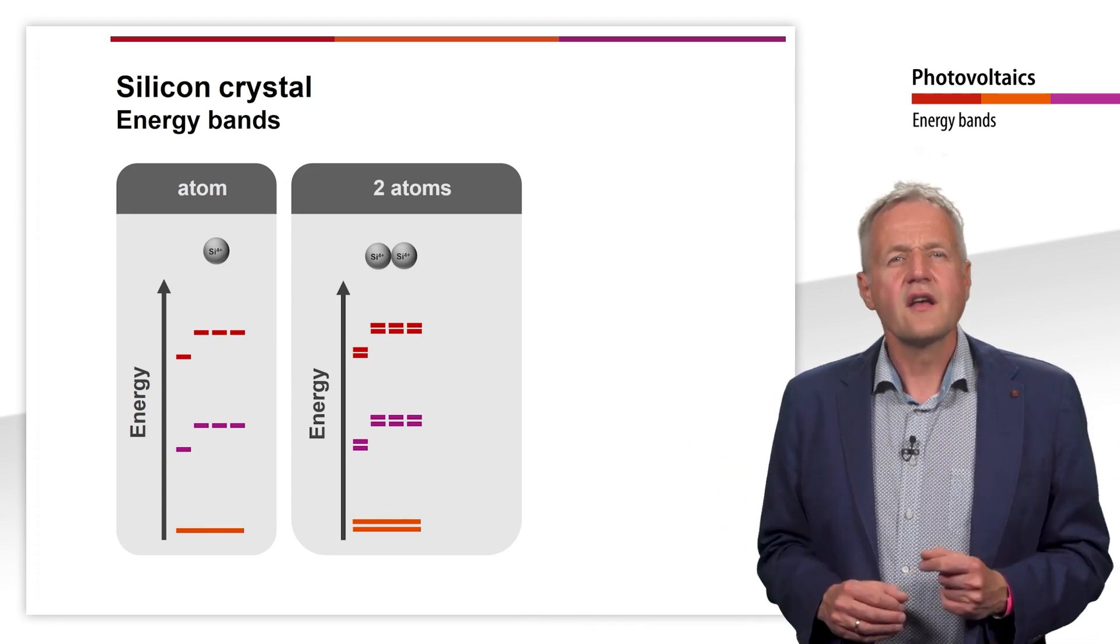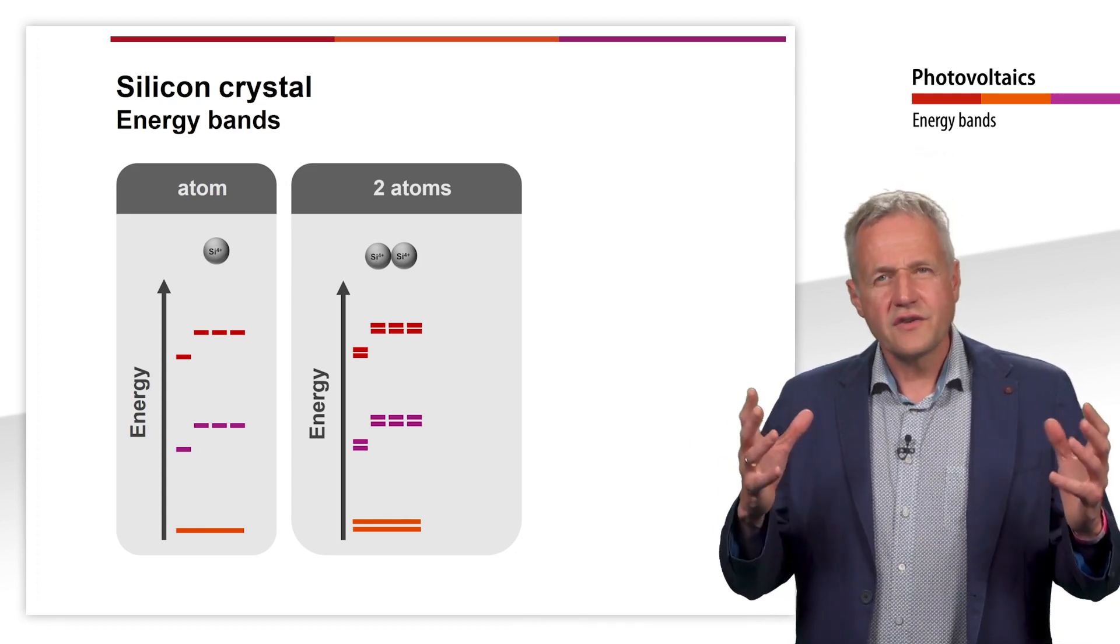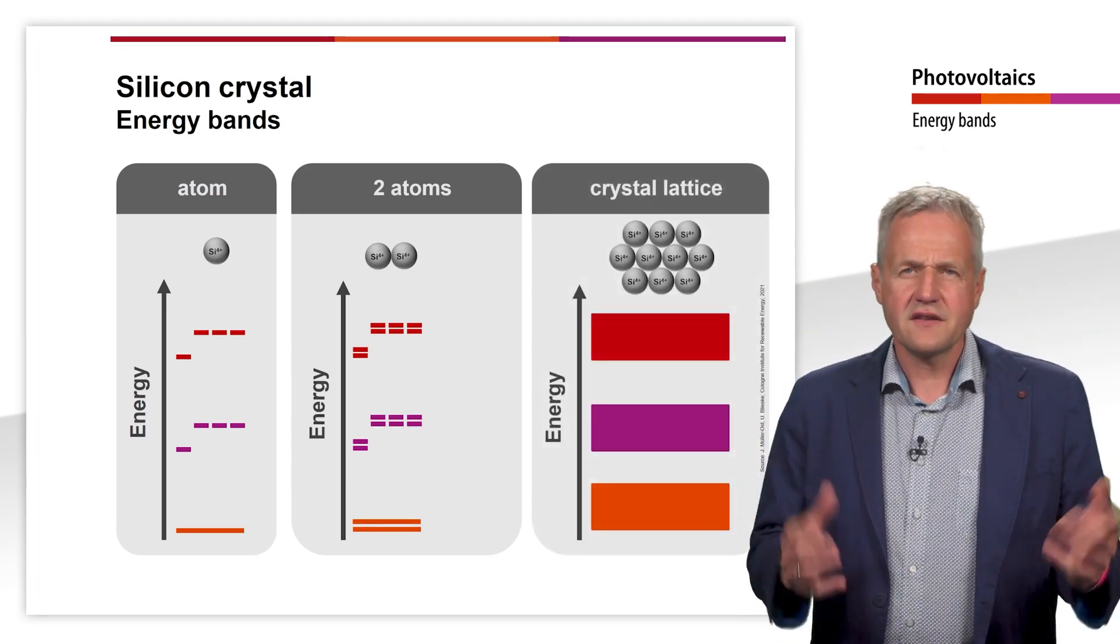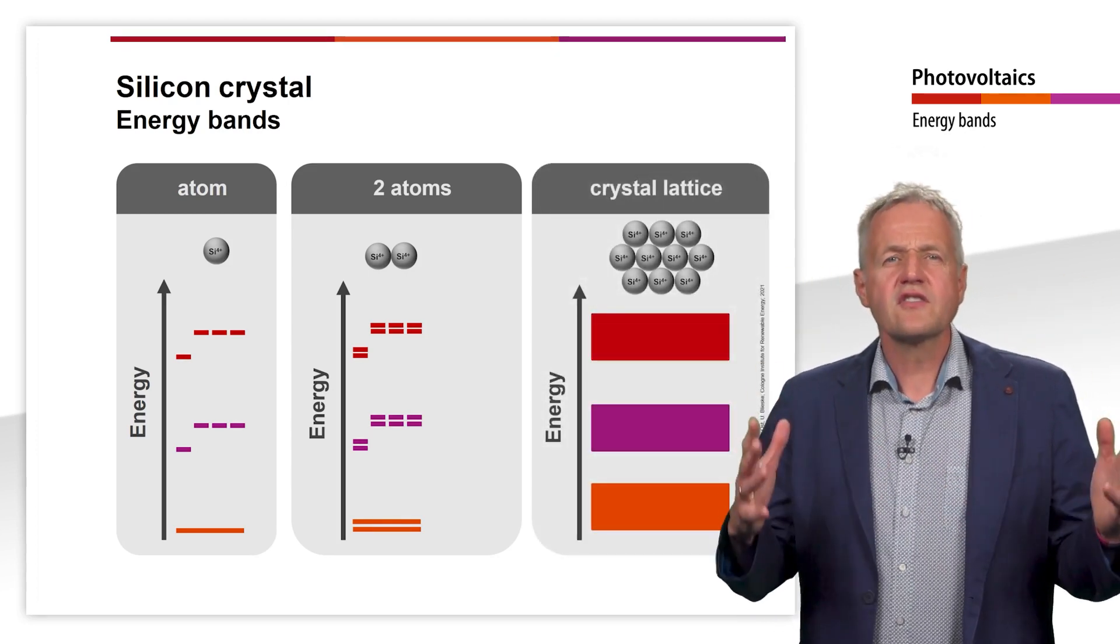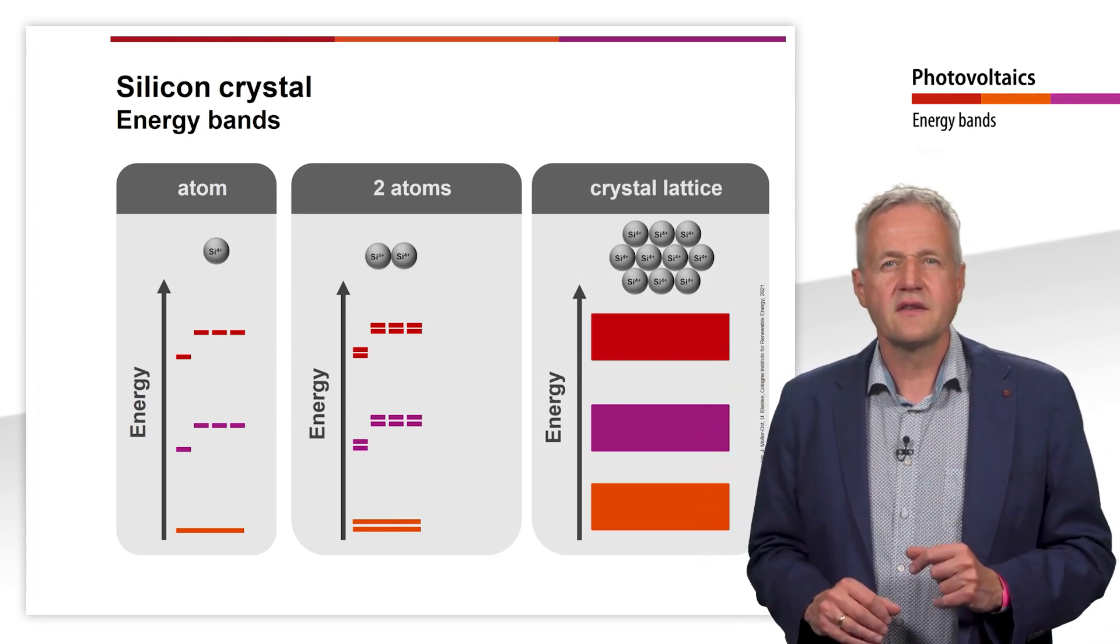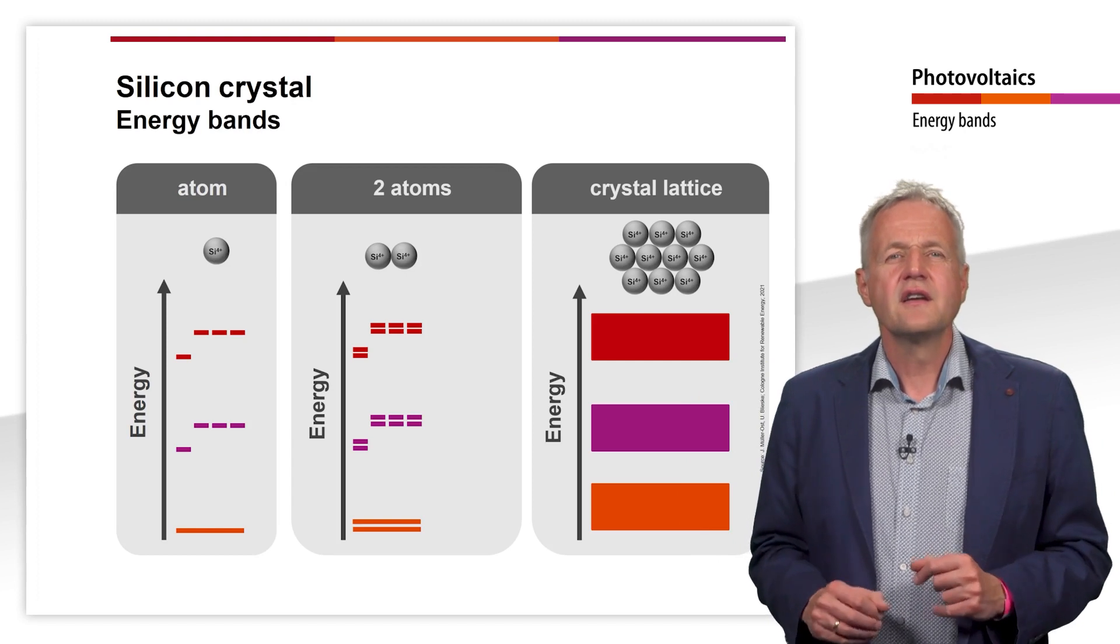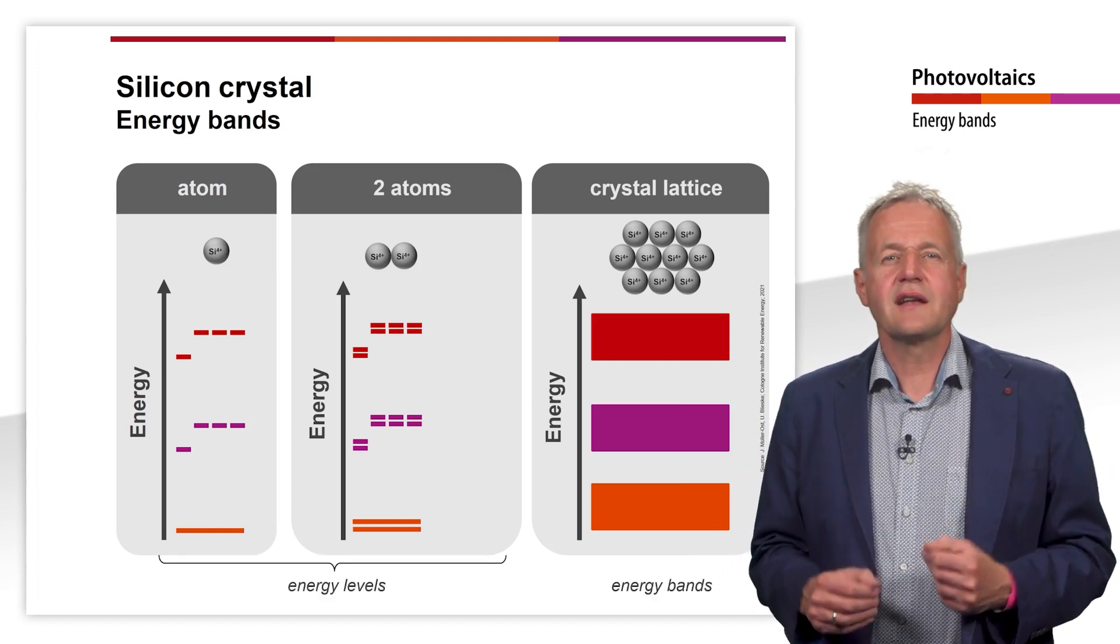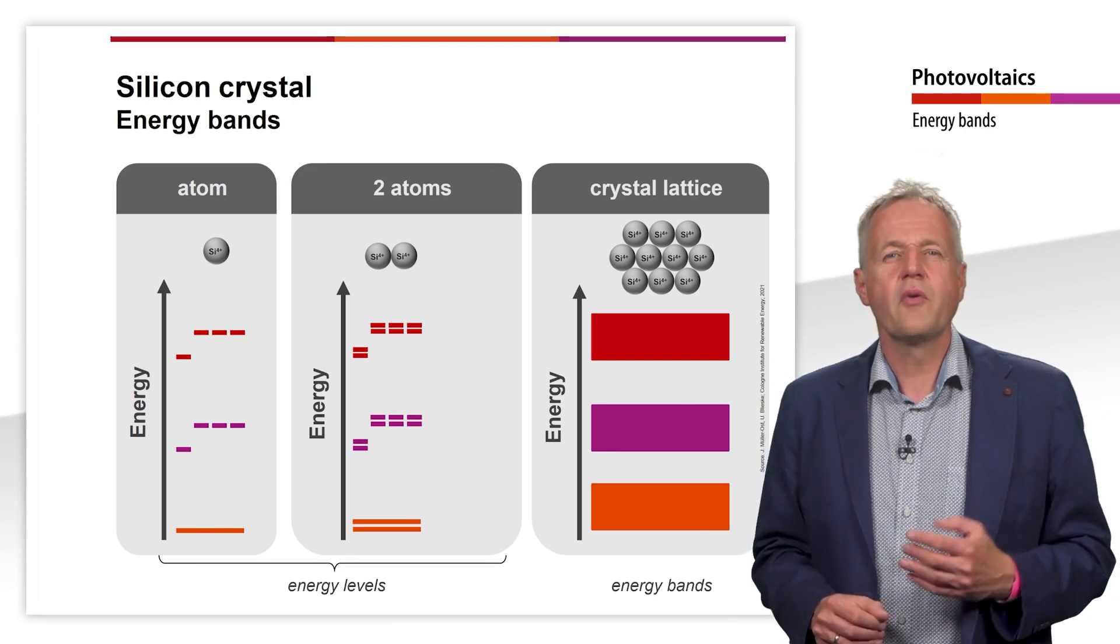Now let us look at a crystal lattice made up of billions of atoms. In this crystal lattice, the energy levels split so far that permitted energy areas arise, the energy bands. In these energy bands, the various discrete energy levels can hardly be separated from one another.